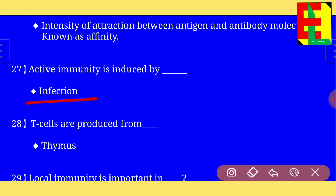Question number twenty-eight: T cells are produced from — the answer is — T cells are produced from the thymus.